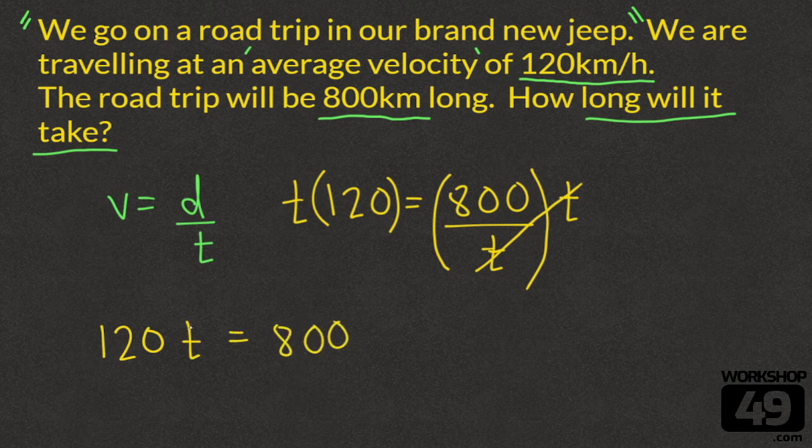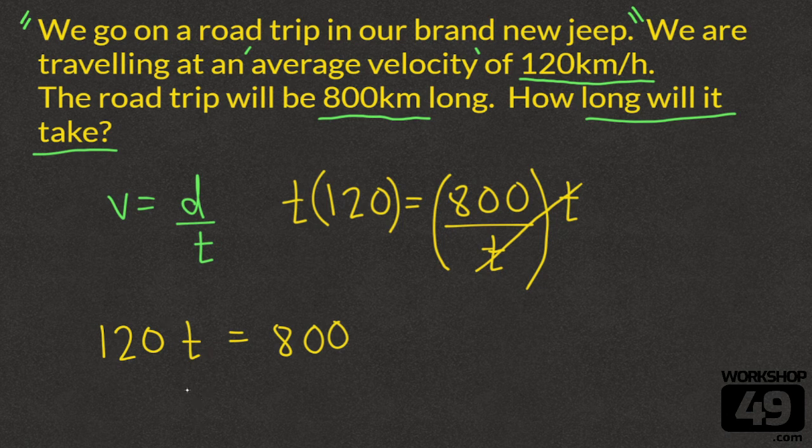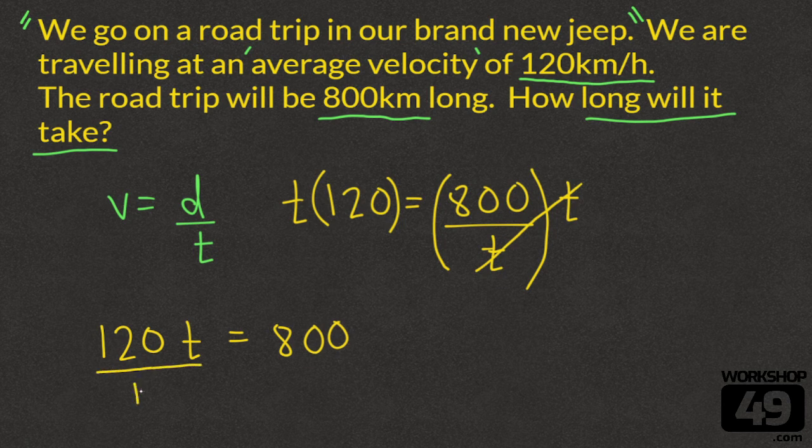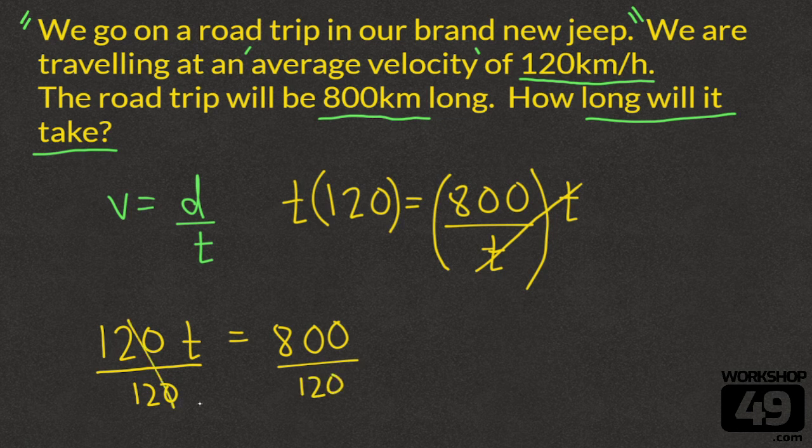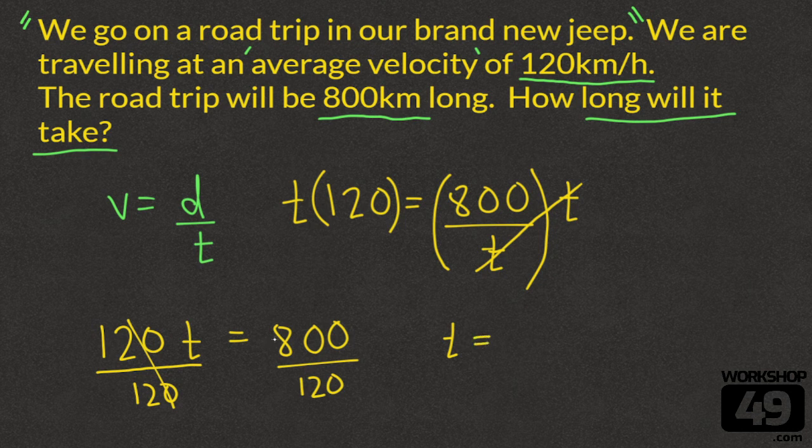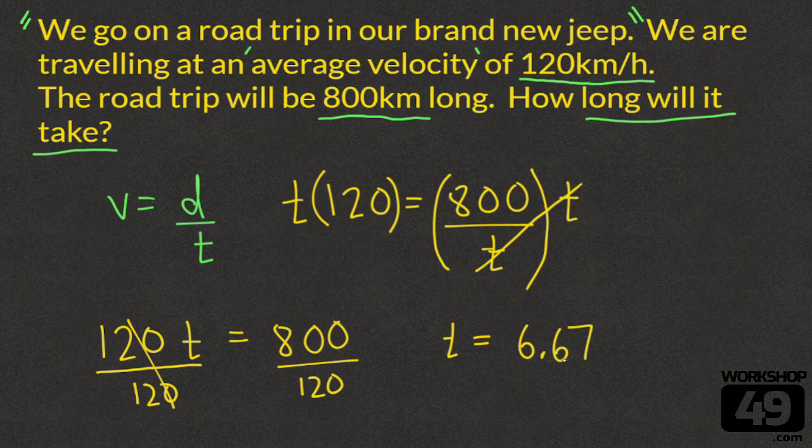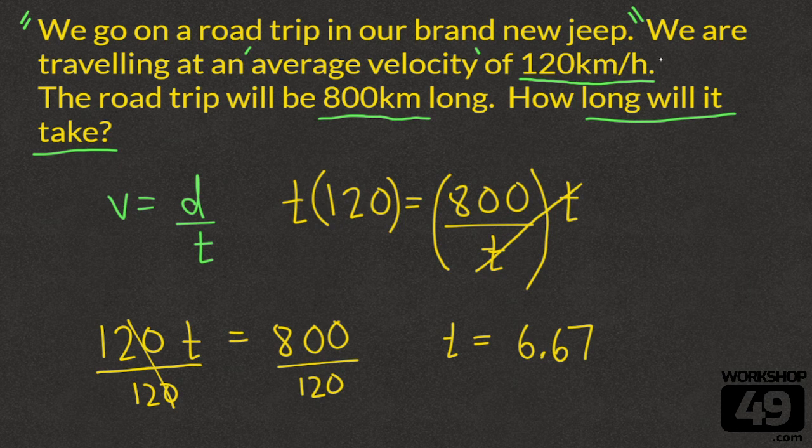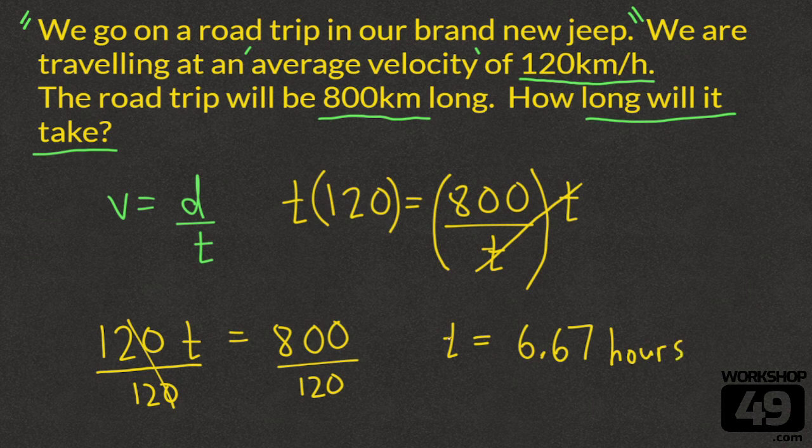We're almost there. We still want our time all by itself, and by the power of algebra, we can do that by dividing both sides by 120. The 120 over 120 cancels out, and it leaves us with T equals 800 divided by 120, which is 6.67. 6.67 what? We go back and look in the equation, and we can see that the time involved in our equation is hours. So it's going to take 6.67 hours.